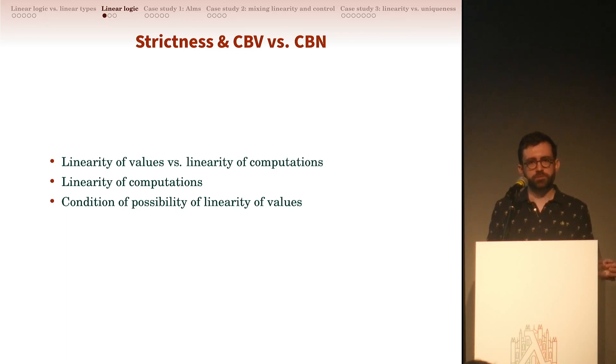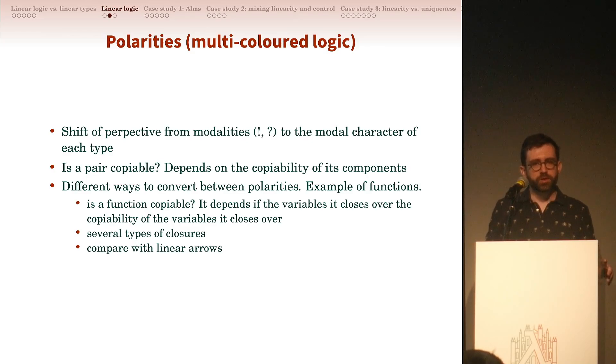When we speak of linearity, whether I use something once or more or not, it's useful to think differently about the linearity of values and linearity of computations. The notion of linearity of computation—if you unfold what that means in linear logic, consuming a pair once is the same as consuming each component once—actually you see you are reinventing strictness and strict data types. If you end up in a logic where you can talk about linear values, then you are already strict in some sense. Strictness is a condition of possibility of linearity of values.